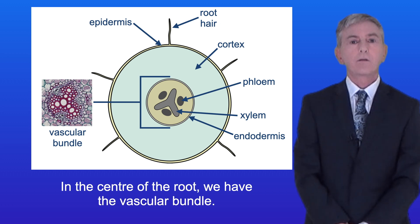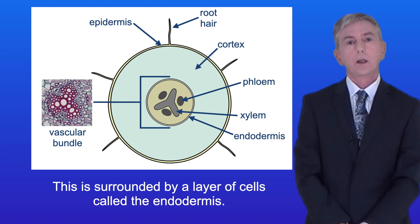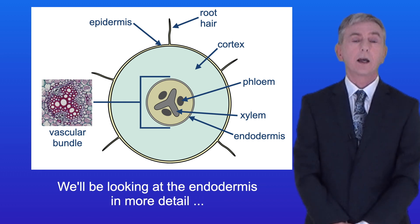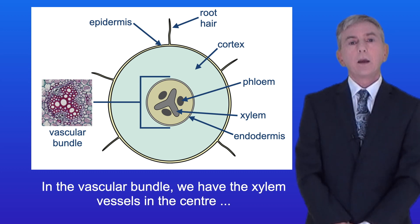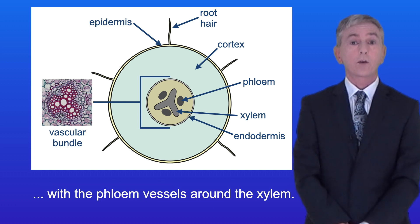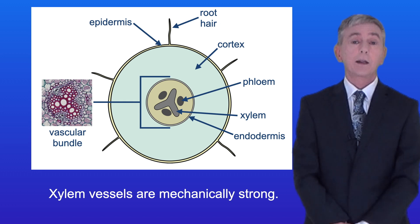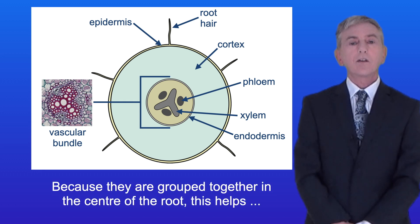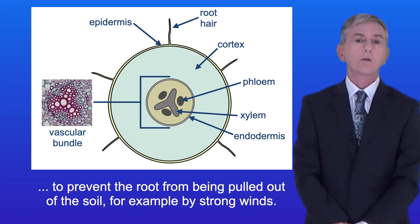In the centre of the root we have the vascular bundle, surrounded by a layer of cells called the endodermis. We'll be looking at the endodermis in more detail when we look at how water moves through the root. In the vascular bundle we have the xylem vessels in the centre with the phloem vessels around the xylem. Xylem vessels are mechanically strong and because they're grouped together in the centre of the root, this helps to prevent the root from being pulled out of the soil, for example by strong winds.